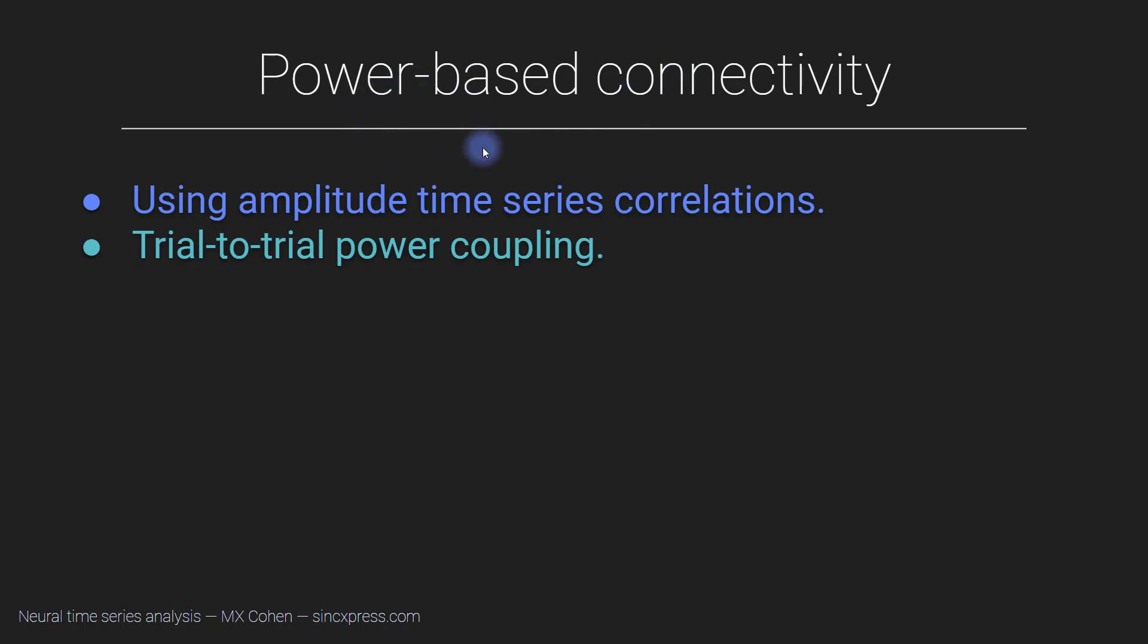Now there is a lot less empirical research that has been done on power-based connectivity, and that's because the neuroscience theory, the physiology theory which I introduced you to in one of the lectures in the beginning of this section, is really optimized for phase. So the kind of neuroscience theory about brain connectivity is strongly related to phase.